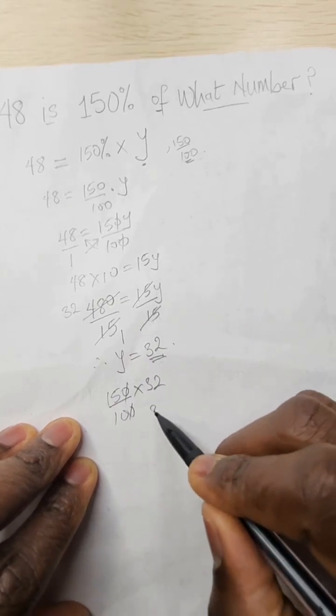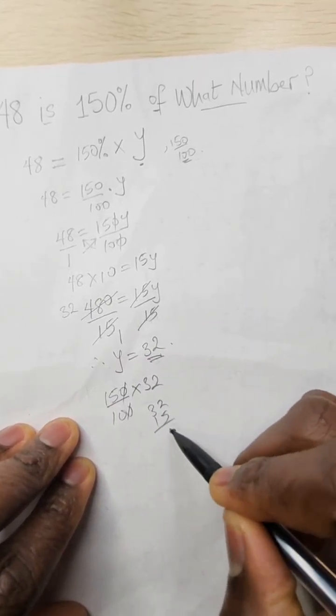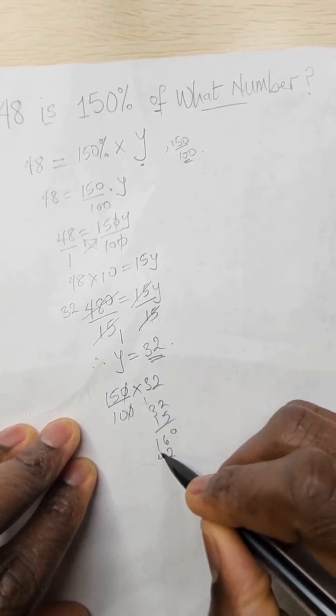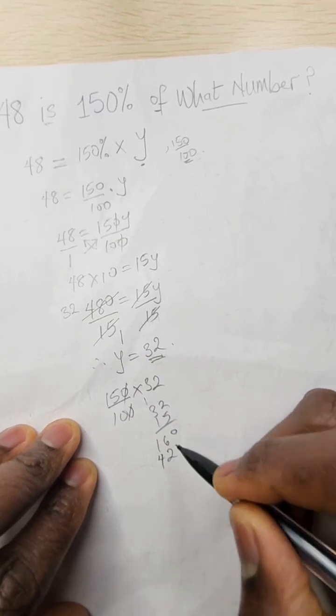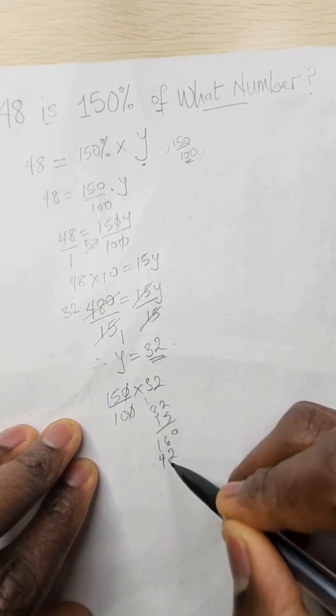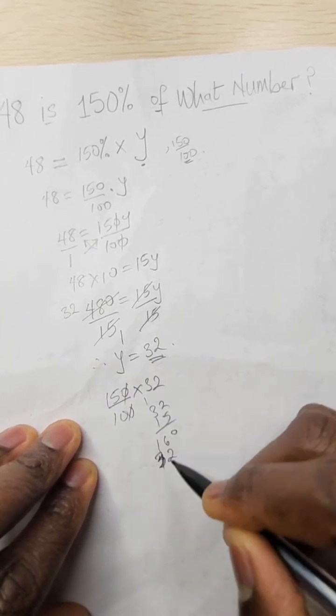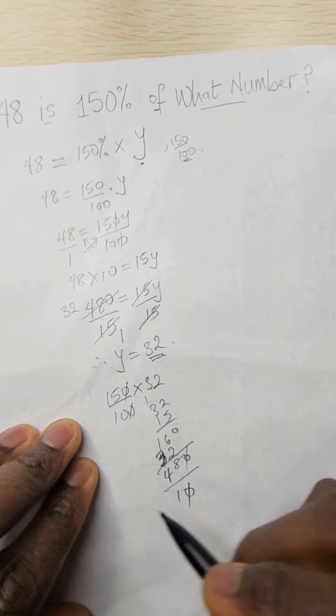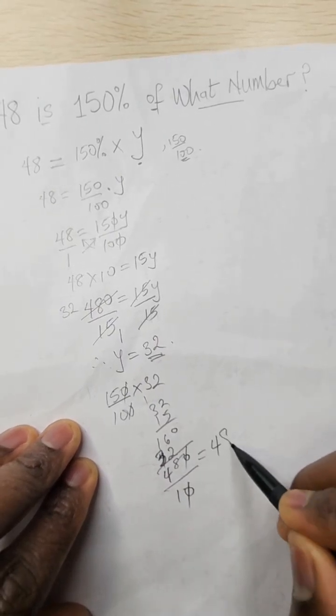So now we have 32 times 15. 5 times 2 is 10, 16. 1 times 2 is 2. 1 times 3 is 3. 4 divided by 10. And we have 48.